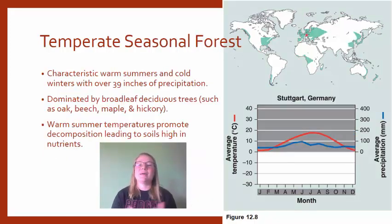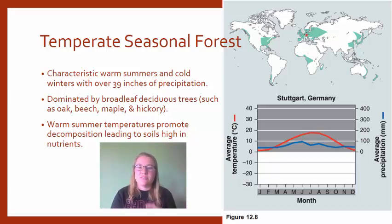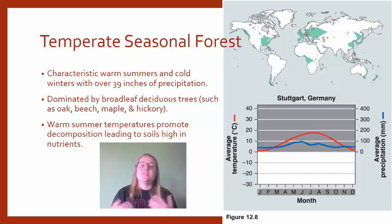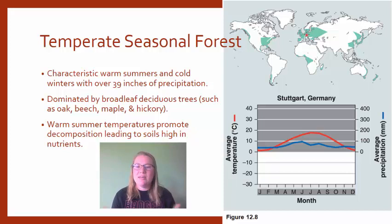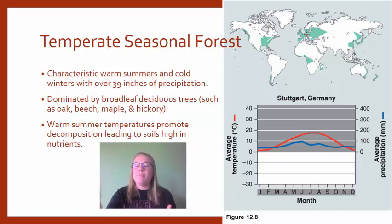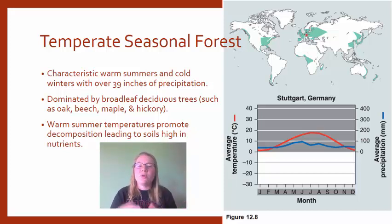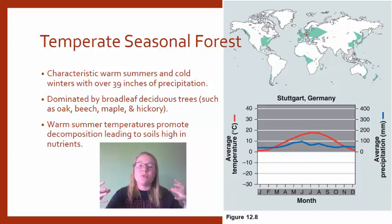The next biome is the temperate seasonal forest — and since we are in southeastern Wisconsin, this is a biome you're probably pretty familiar with. These have very warm summers, cold winters, and a pretty consistent amount of precipitation throughout the year, though not excessive. Because it is warm and above freezing with decent precipitation for most of the year, there is a whole bunch of decomposition happening in the soils, making them very nutrient rich, which means you can grow a lot of things.